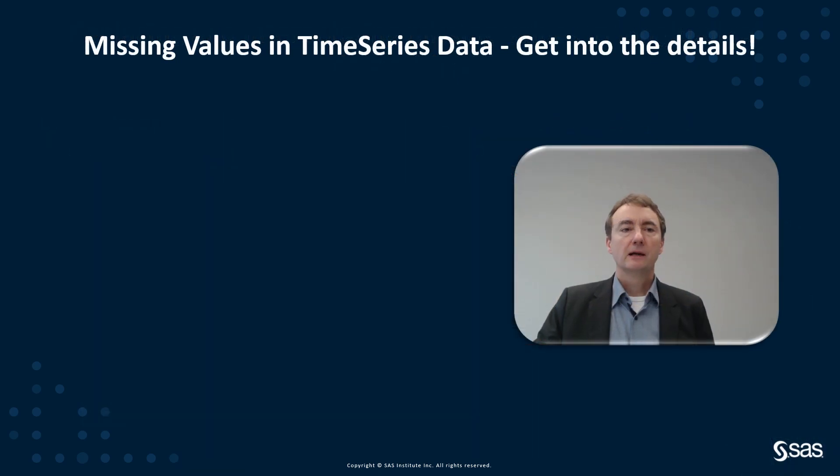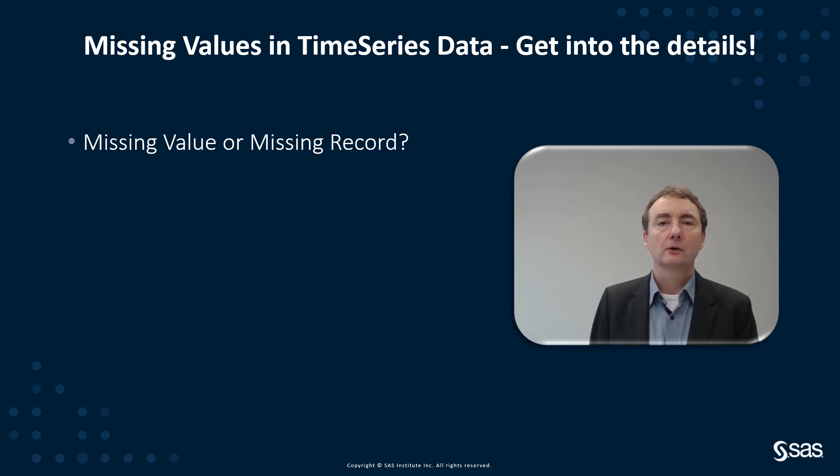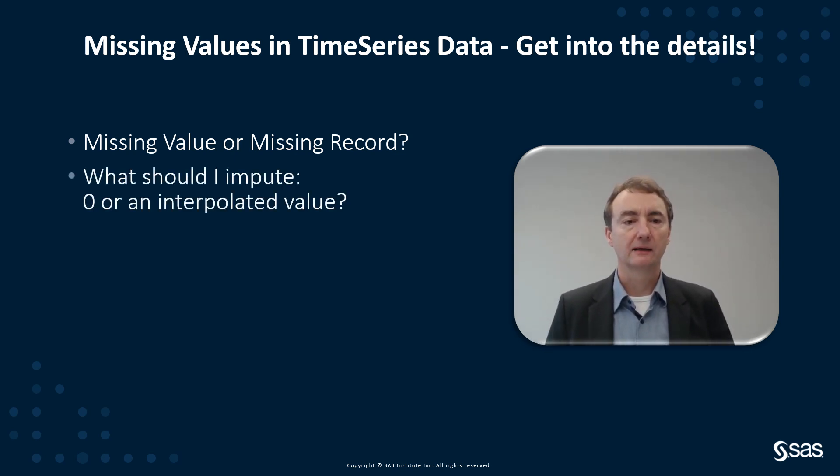In this webinar we have seen that missing values in time series is something where you should go into more detail. You should check whether is this a missing value or a missing record that I'm looking for, and how can or should I handle them? And if I decide to impute, what is an appropriate imputation value? Is it just an interpolated value like we had with the temperature? Or is it a zero value which we had, for example, for the website visits? If nothing happened in that period, then we should impute zero.